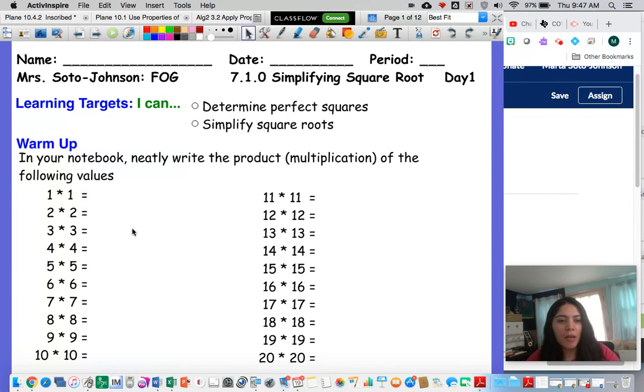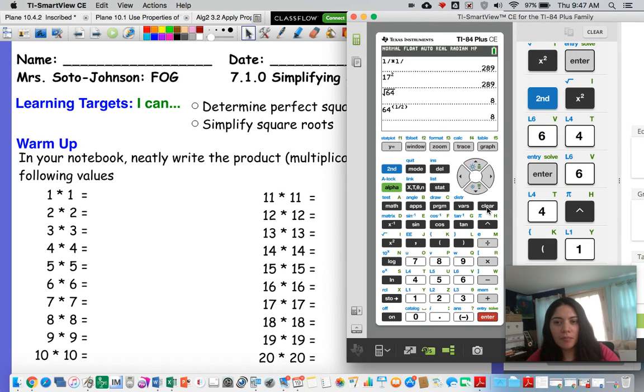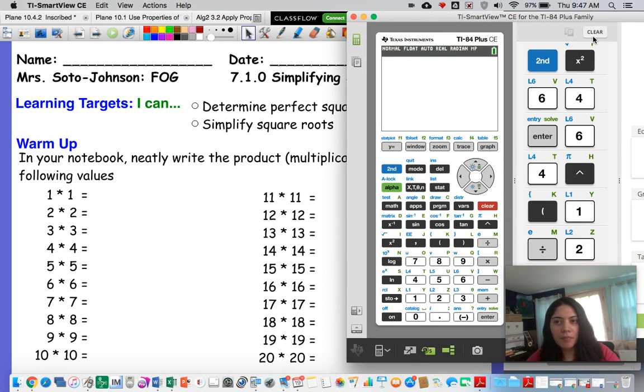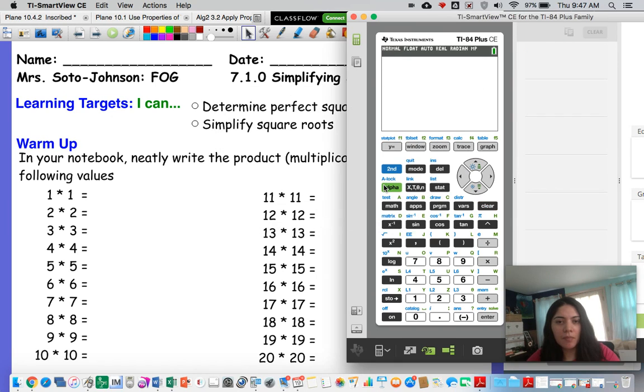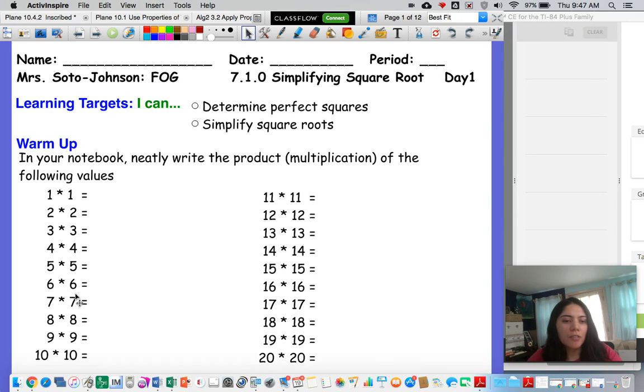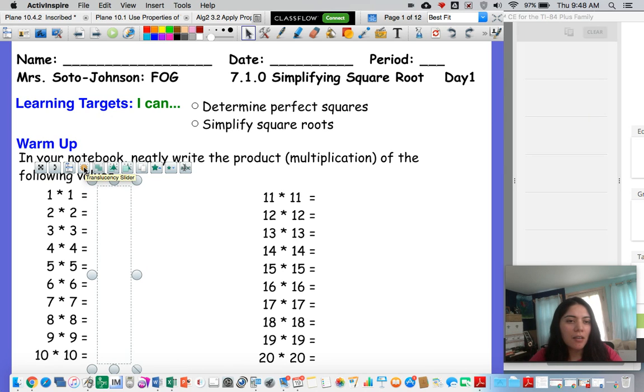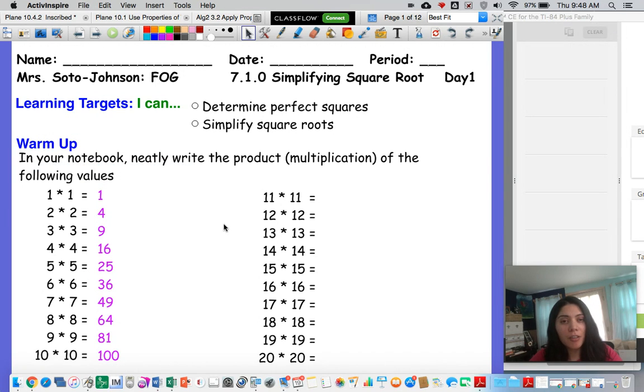Okay, so in your notebook I want you to go ahead and write the multiplication of these values while I finish setting up my screen. Okay, so these values, what you're doing is multiplying the same number to itself two times. So one times one is one, two times two is four. And these are the values that you should remember from learning your multiplication table from like third and fourth grade.